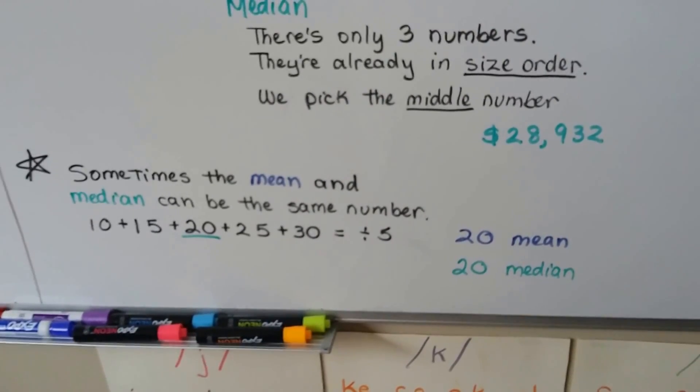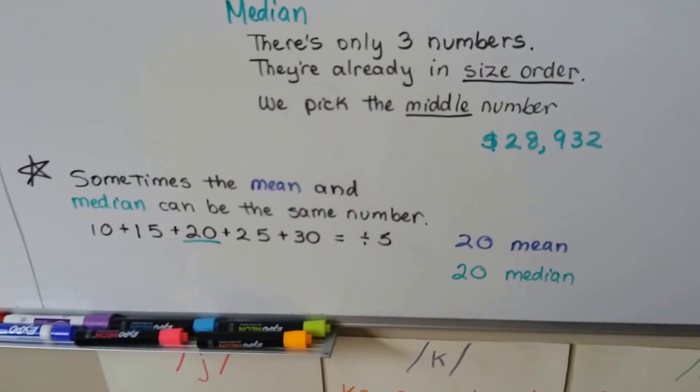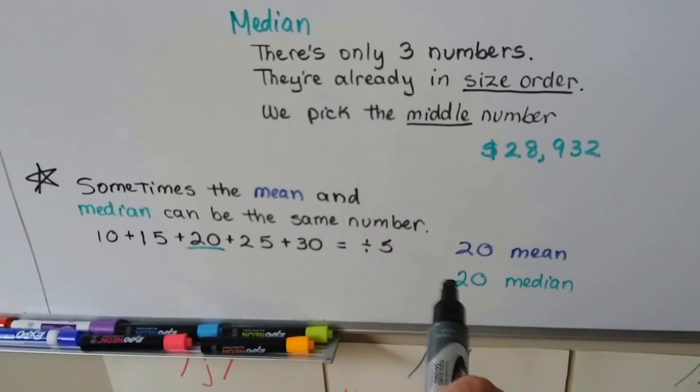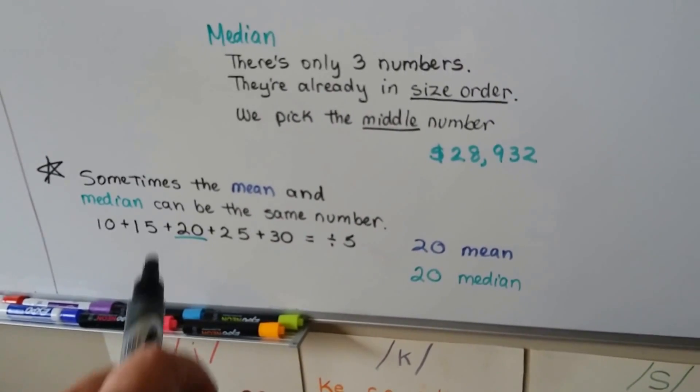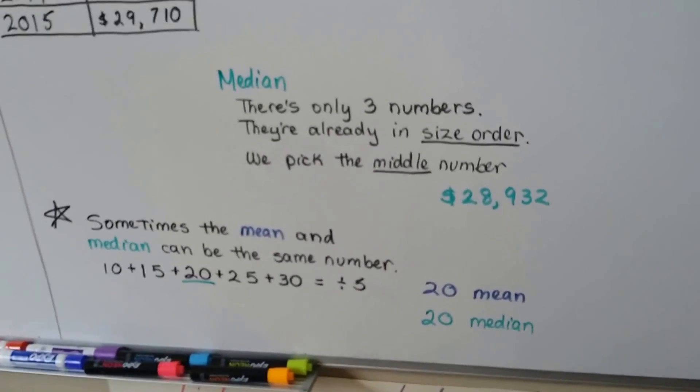So they could be different numbers, or they could even be the same number. So if you end up getting the same number, don't think you did something wrong, because sometimes that can happen. If you're really unsure, just do it again and double-check your work.